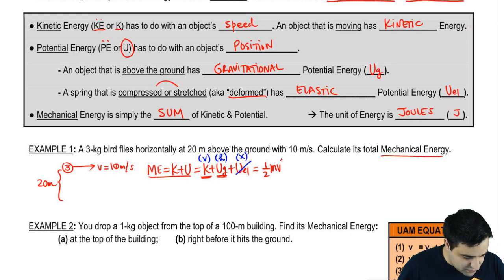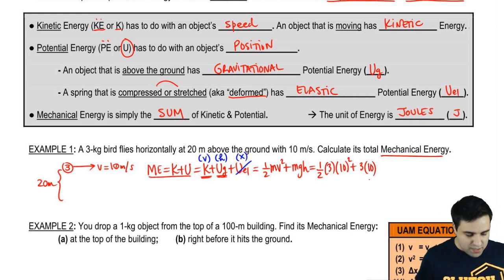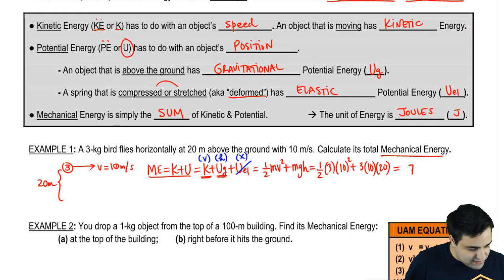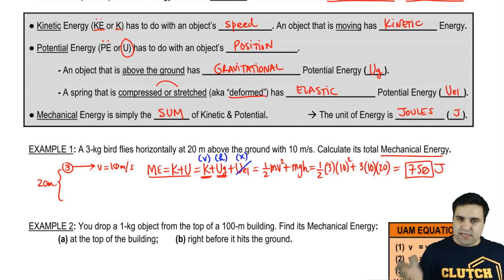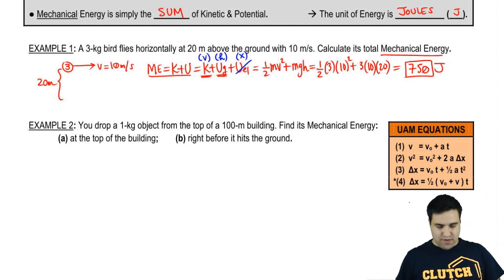So half MV squared plus MGH. Half the mass is three. The velocity is 10 squared plus M3. For gravity, I'm going to use 10, just to make it faster. But it's 9.8. And then H is 20. And if you add up all of this, you get 750 joules. And that's it. Just plug and you're done. Let's do this next one here.